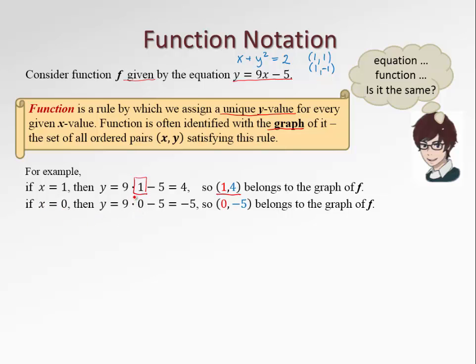If x equals 0, we plug into the formula, the corresponding y is 9 times 0 minus 5, which gives us negative 5. Similarly as before, that means that the point (0, -5) belongs to the graph of the function f. We could sketch a diagram just to have a better idea how this function looks like.